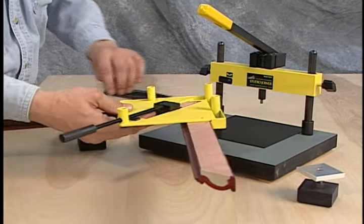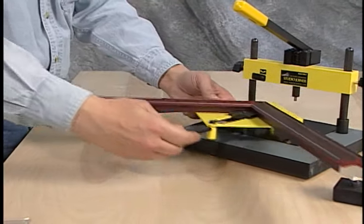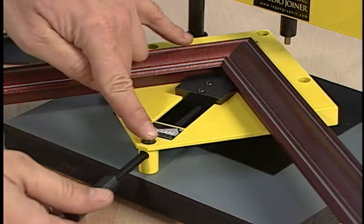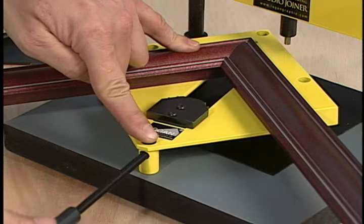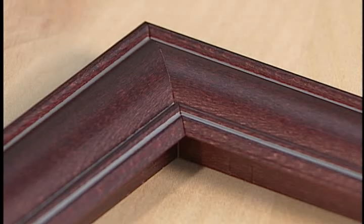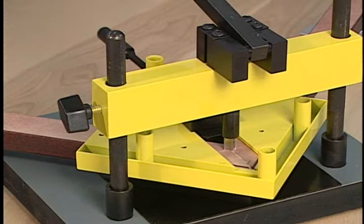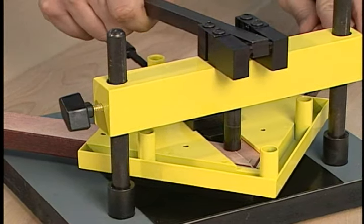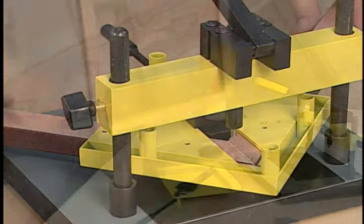After a corner is joined, loosen the molding vise handle to release the joined corner. Continue this process for the remaining three corners to complete your frame.